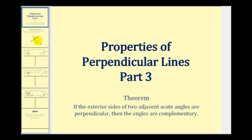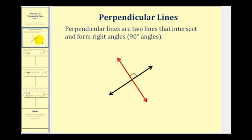Let's start by defining perpendicular lines. Perpendicular lines are two lines that intersect and form right angles, as we see here.